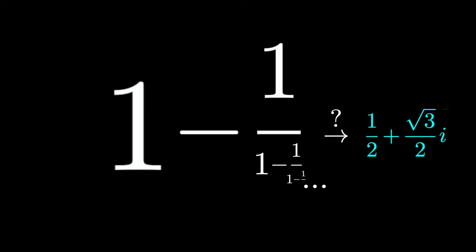After all, this is a sequence of real numbers, and it appears to approach a complex number. Where do we get that result, and how do we make sense of it?